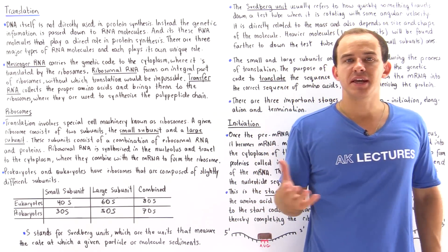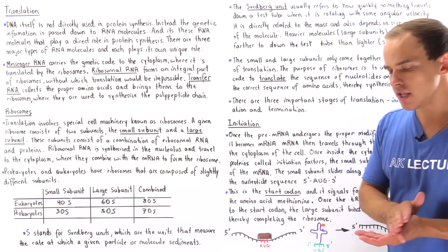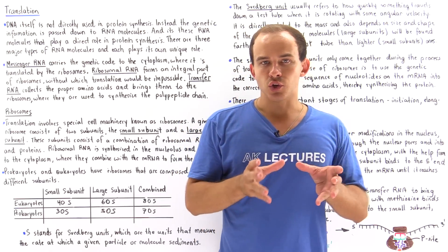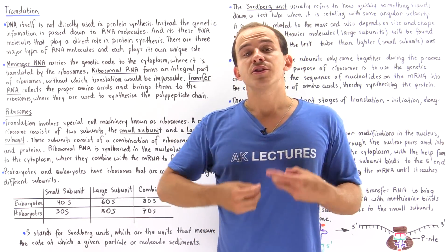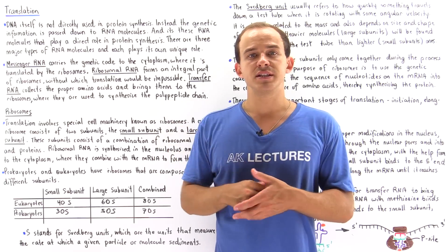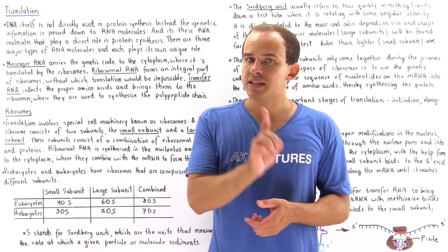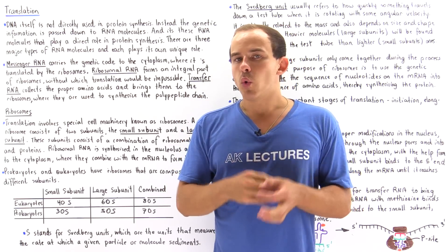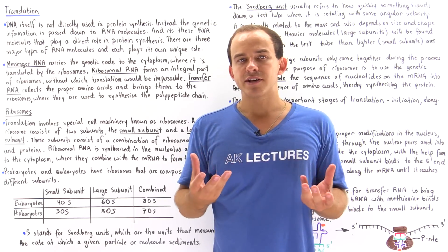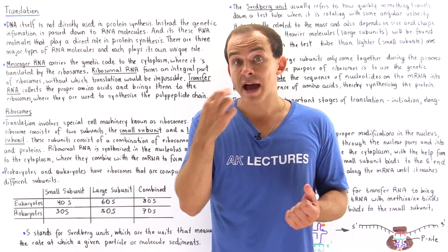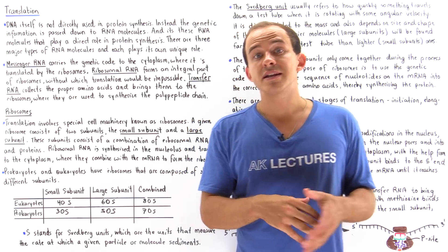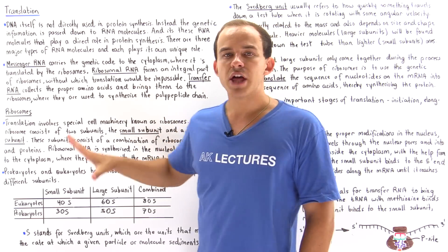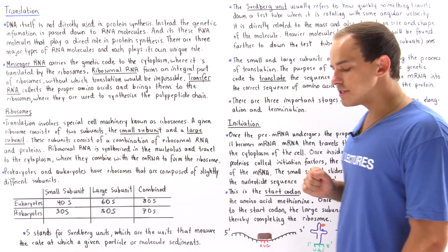In the next several lectures, we're going to begin our discussion on the process of protein synthesis, also known as translation. Now recall that DNA molecules, although they do carry and store the genetic information needed for protein synthesis, the DNA molecules themselves are not actually directly involved in protein synthesis. The genetic information stored in DNA is transferred to RNA molecules, and it's the RNA molecules that are directly involved in protein synthesis, which takes place in the cytoplasm of the cell.